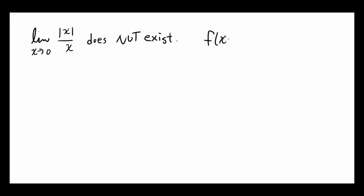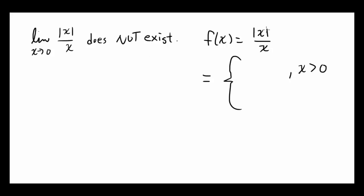This is f of x equals absolute value of x over x. When x is positive, that is x is greater than 0, absolute value of x is going to be the same thing as x. And x is going to stay the same, so it's going to come out to be x over x, or 1.